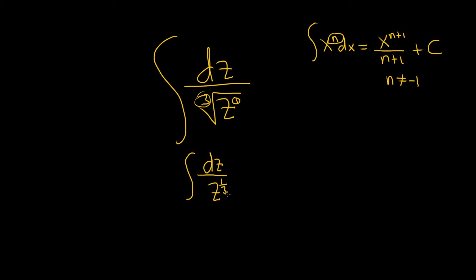The next step is to bring the z upstairs. So we can write this as z to the negative 1 third dz. Remember there's a property of exponents that says that whenever you bring the z up like this, it'll make the exponent negative.